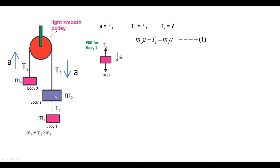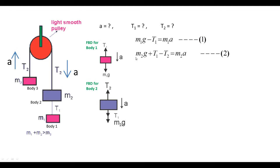For the free body diagram of body two: T2 acts upward, while T1 and m2·g both act downward, with acceleration downward. Therefore T1 plus m2·g must be greater than T2, giving the equation: m2·g plus T1 minus T2 equals m2·a.